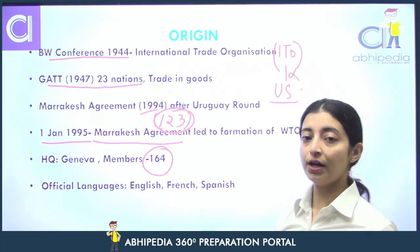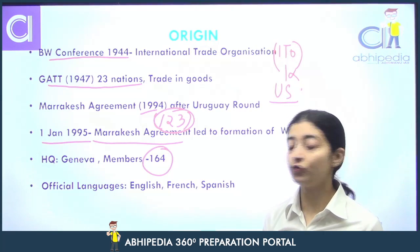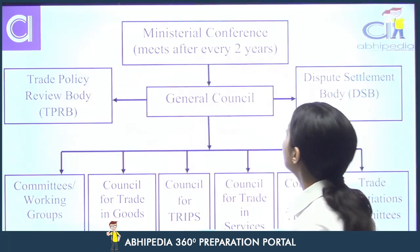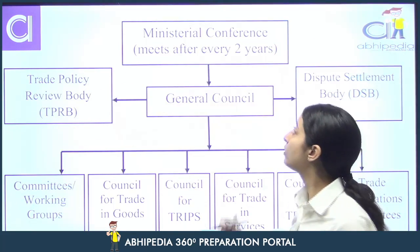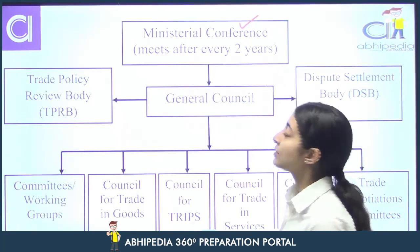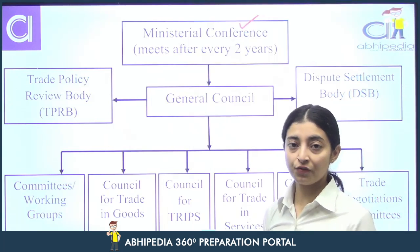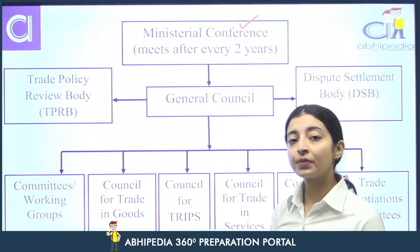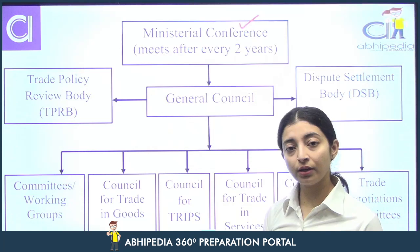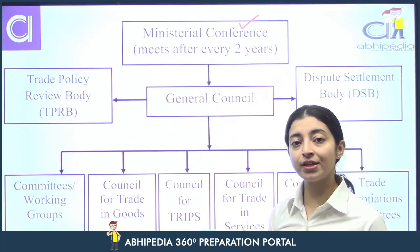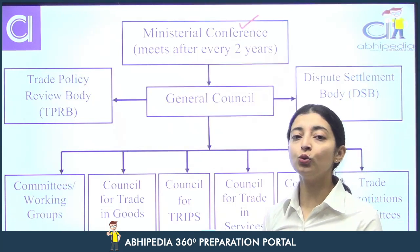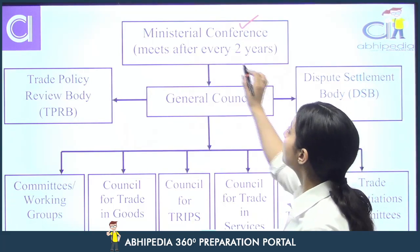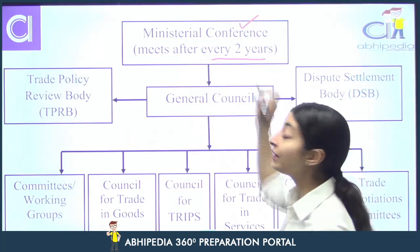Now let's move forward. Ab hum thoda structure ya components of World Trade Organization ki baat karte hain. Firstly, ministerial conference. Ye highest level conference hoti hai World Trade Organization ke under. Ismein sab nations ke representatives hote hain. Ye har 2 saal baad hoti hai — ministerial conference.